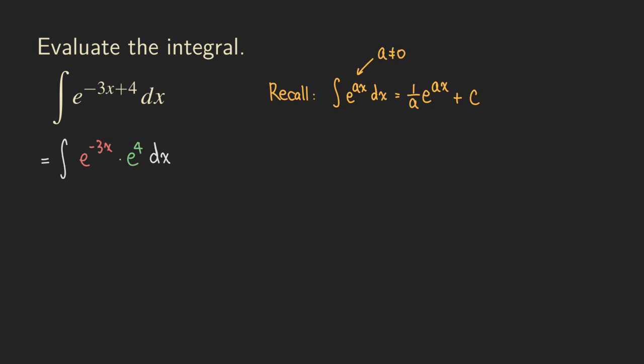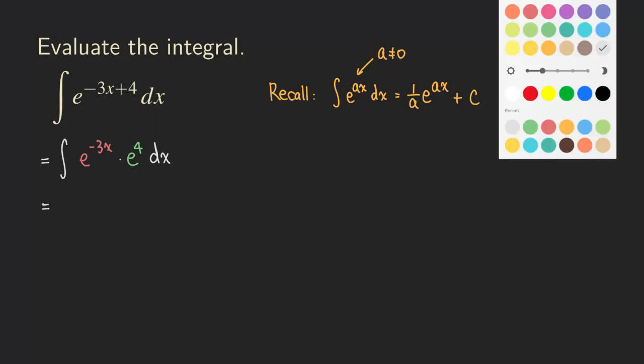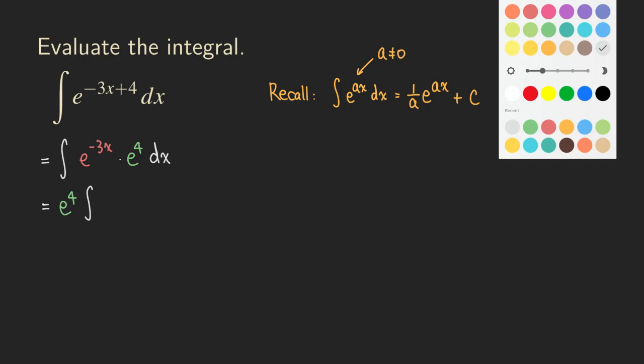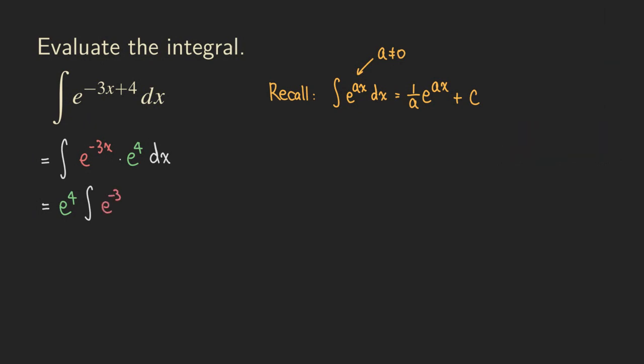See what's going on here? e to the fourth is actually a constant. So we can move it outside the integral. So if we do that, we are going to get e to the fourth times the integral of e to the negative three x dx.